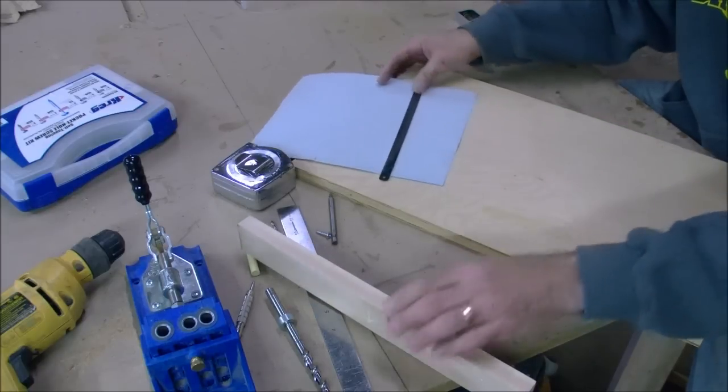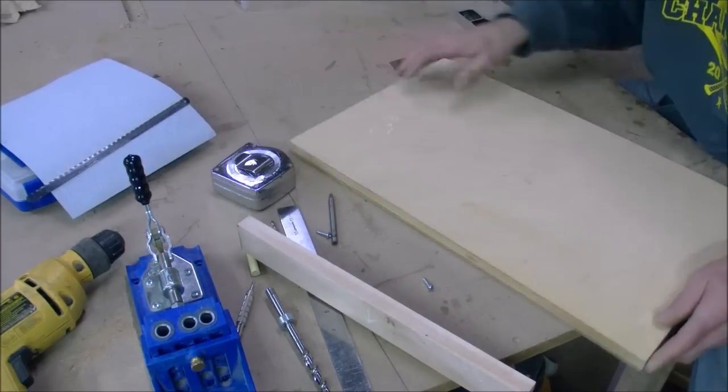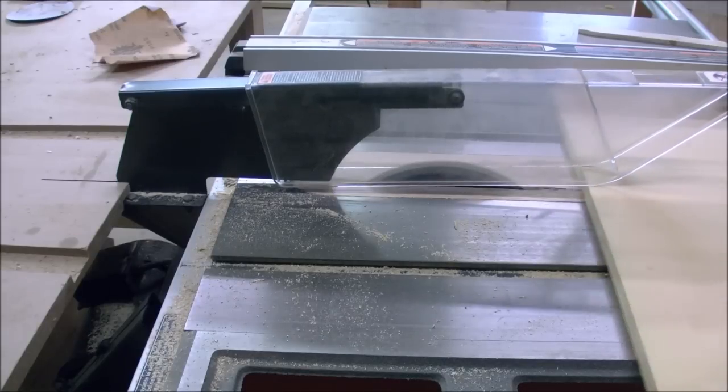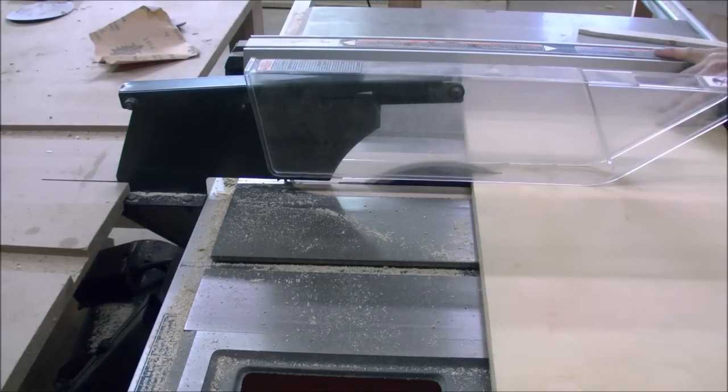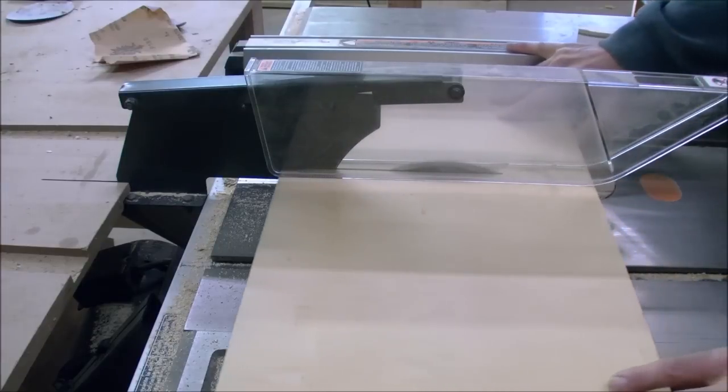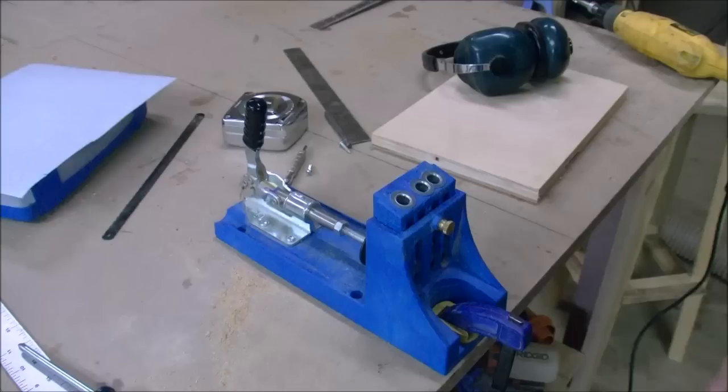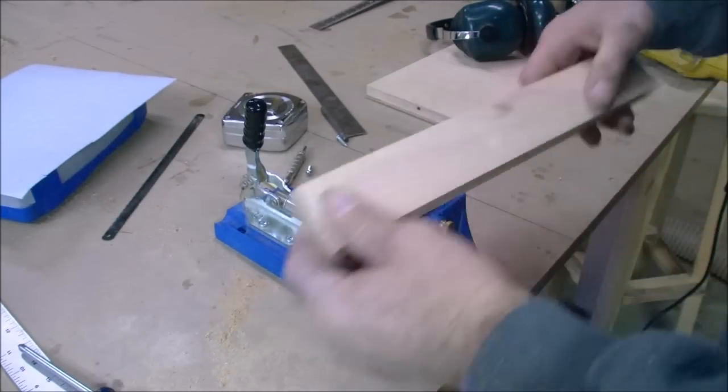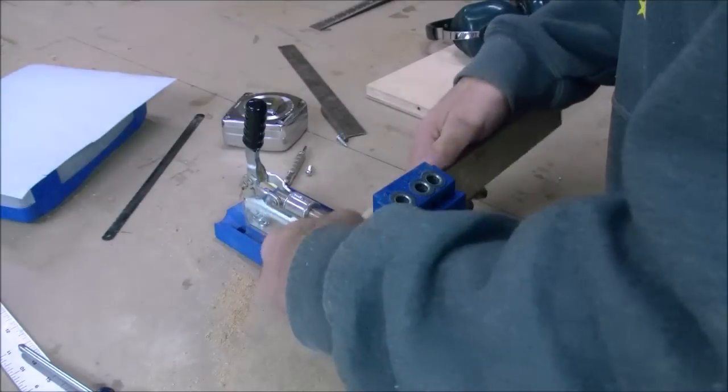So first thing, I'm going to head over to the table saw and I'm going to cut this plywood down approximately 12 inches by 8 inches. Next, drill a couple pocket holes in the back of your fence. Three should be plenty.